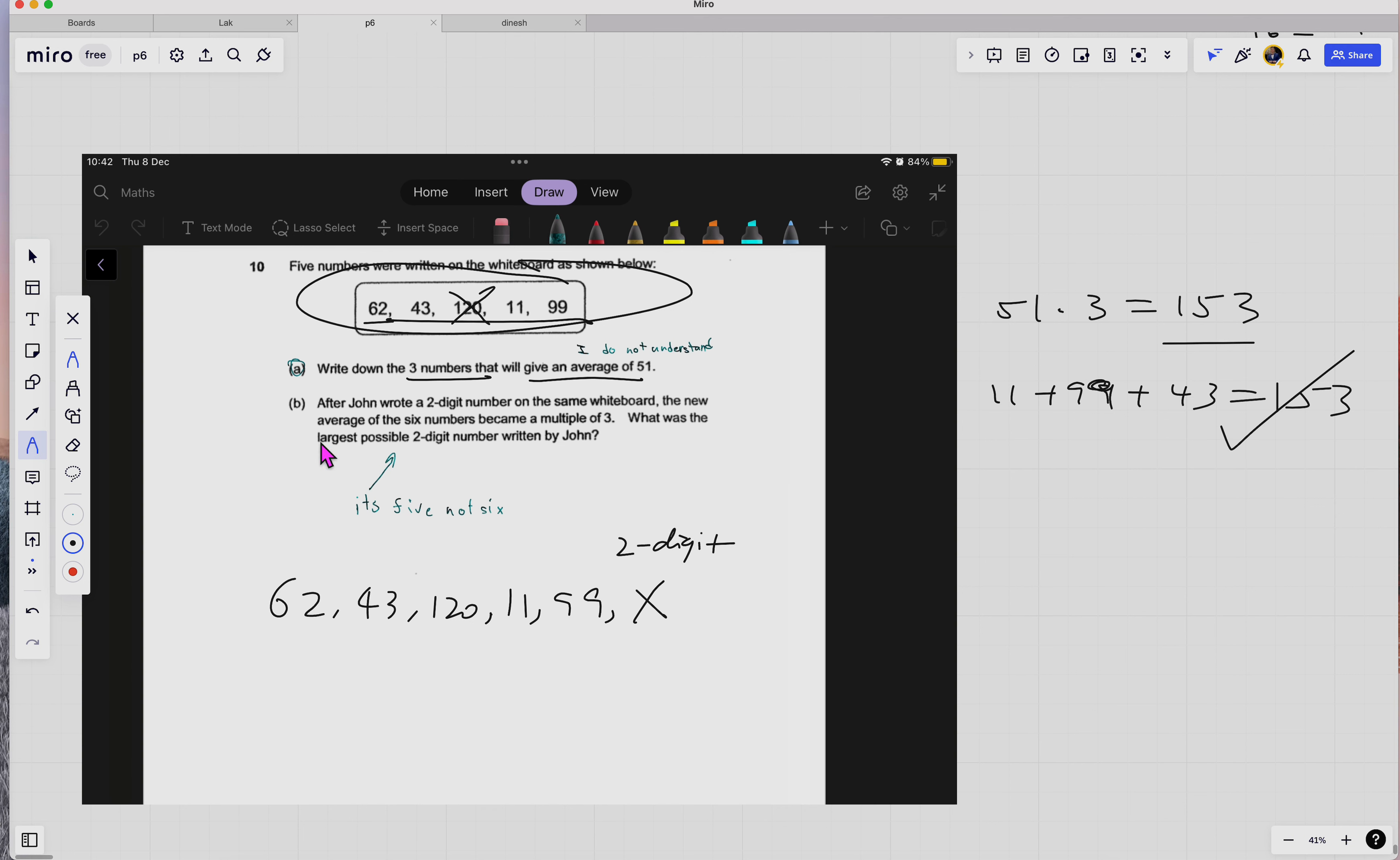Then the new average of the six numbers became a multiple of three. What was the largest possible two-digit number written by John? So first you need to get the total of this first. What's the total of these five numbers?